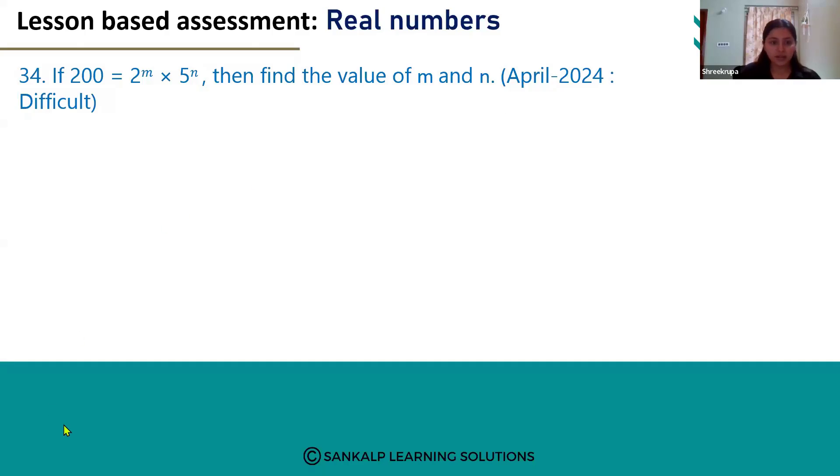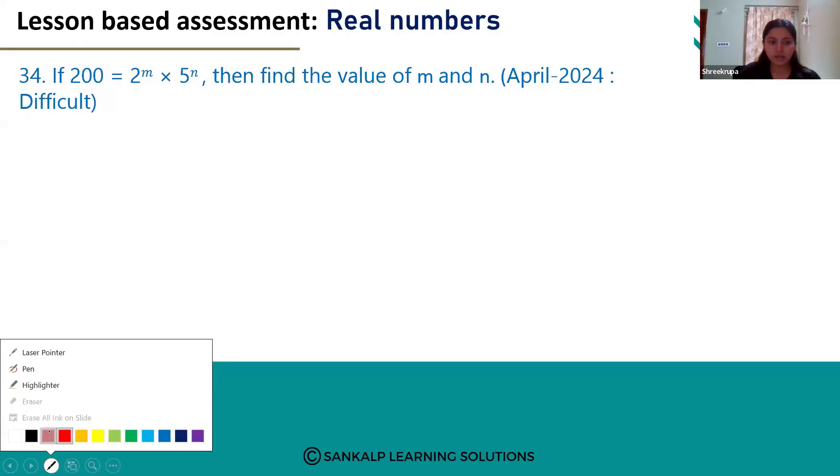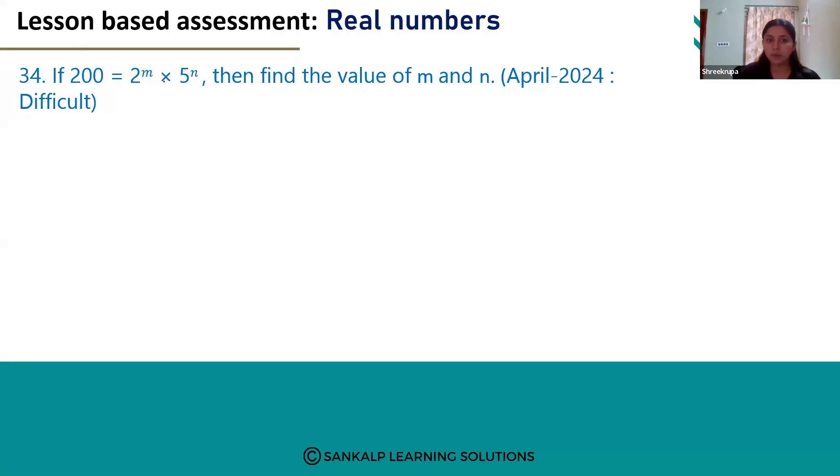So here they have given factorization of 200, that is 2 power m multiplied by 5 power n, but we don't know the values of m and n. We have to find the values.